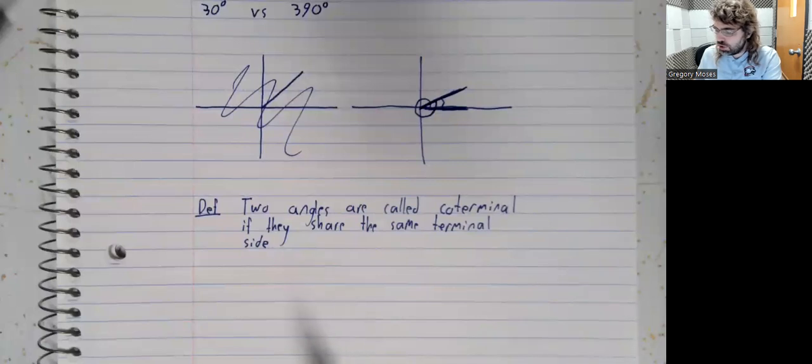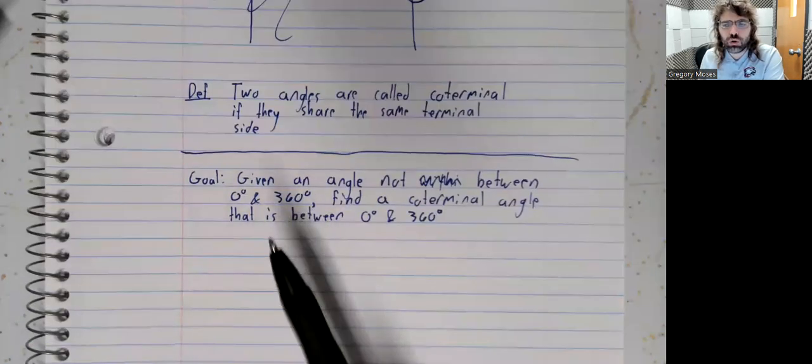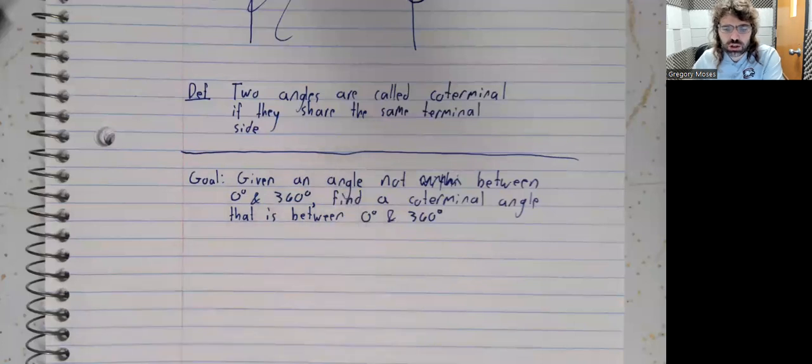Let's talk about this as our primary goal for this video. Given an angle that's not between 0 and 360 degrees, so given a negative angle or given a large positive angle, we'd like to find a co-terminal angle that is between 0 and 360 degrees.